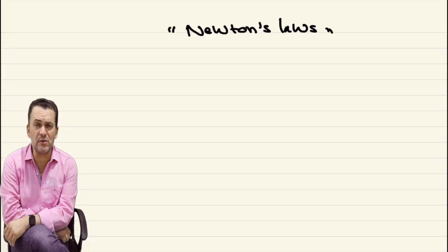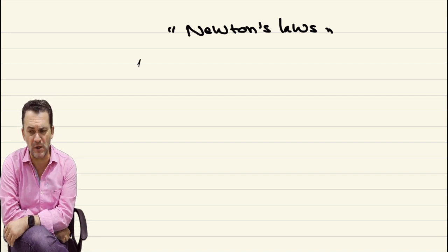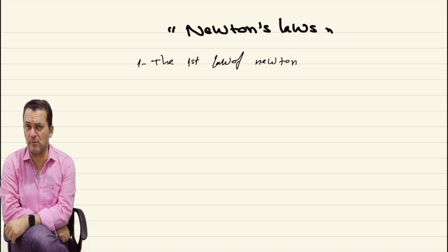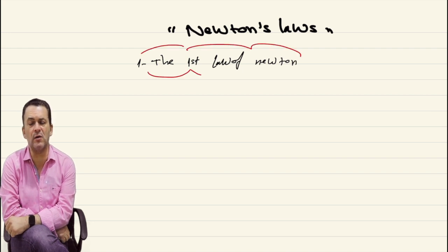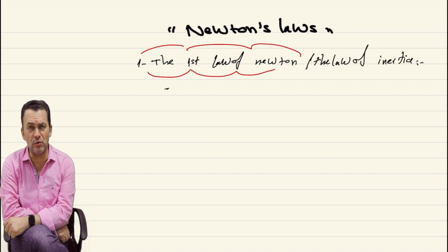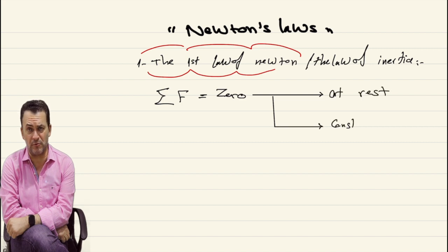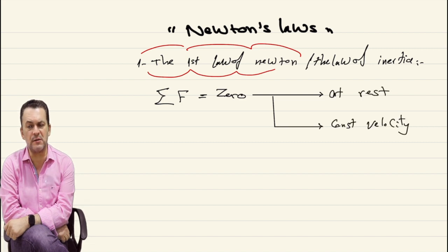When it comes to Newton's laws, we write the first law of Newton, which is known as the law of inertia. It gives us an idea about the total force acting over any body being zero, under two certain conditions. The first condition is if the body is at rest. The second condition is if the body is moving under a constant velocity.